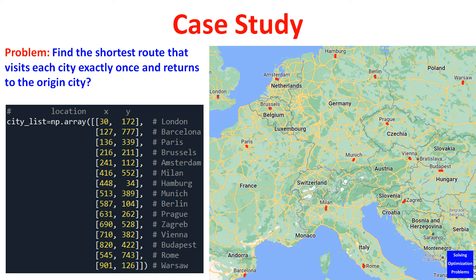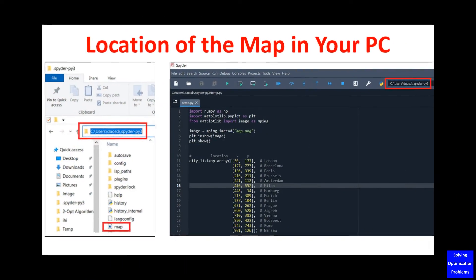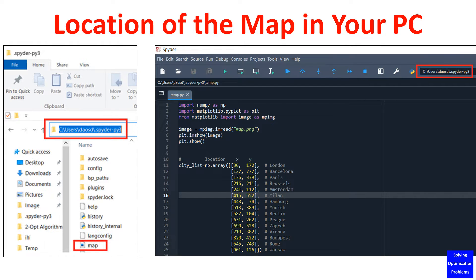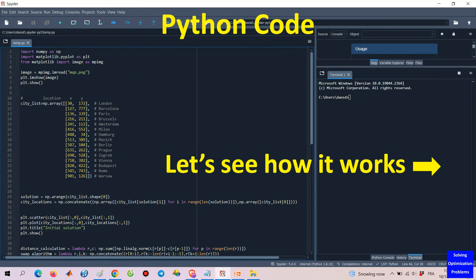Now let's apply the two-opt algorithm to solve this case study problem. Suppose we want to visit 15 major cities in Europe, as shown in this map. The question is how to find the shortest route or path that visits each city exactly once and returns to the origin city. Exact locations of all cities in terms of x and y coordinates are given here. Please remember to put your Google Map in the right place as shown, otherwise the Google Map cannot be visualized. Finally, let's have a quick look at the Python code of the two-opt algorithm and how it solves the case study problem.